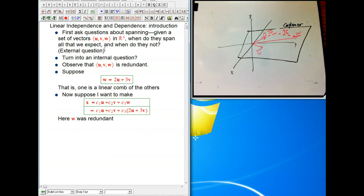And it's always going to be redundant if it can be made as a combination of the others. So this explains why I'm only getting a two-dimensional subset of R³ out of this. Because it's not really three vectors that I've got here. I've got the vectors u and v, and then the vector w is secretly just a combination of those.